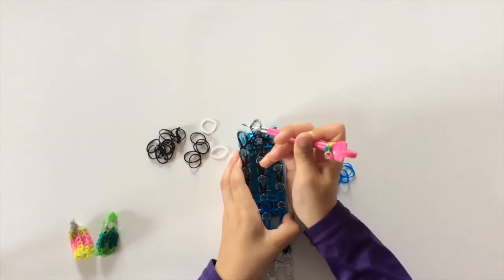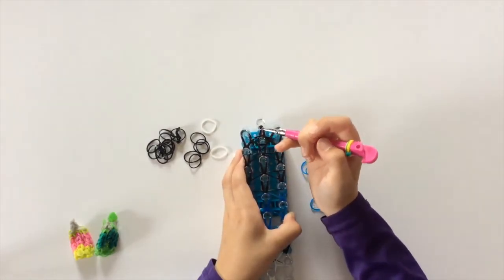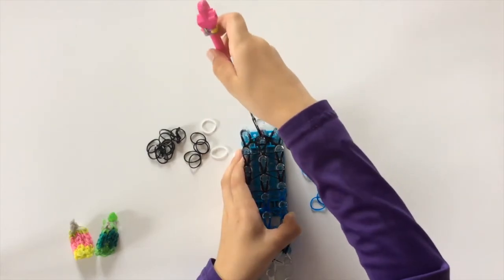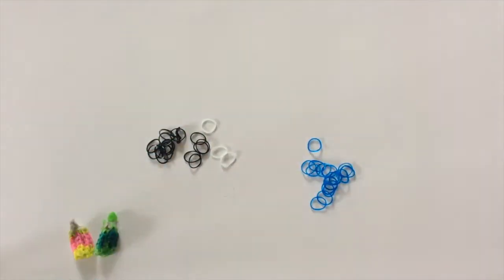Now just take that off and slip out those two bands. Pull that really tight, not too tight that it breaks, and then just put that back on. Flip over your loom, and now you are ready to start taking off your design.